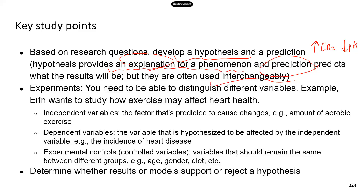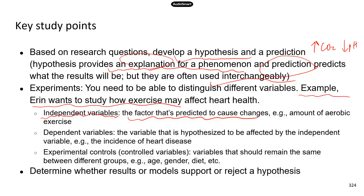When you conduct experiments to test your hypothesis, you will have different types of variables. The independent variable is what you set up before you conduct the experiment — it's the factor that you think is going to make some changes. In the carbon dioxide example, the independent variable would be the different amounts of carbon dioxide introduced into the blood. In Erin's experiment studying how exercise may affect heart health, the independent variable could be the amount of aerobic exercise — the factor you can change and manipulate that will affect the outcome.